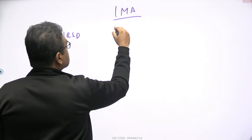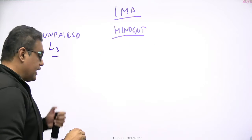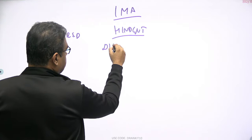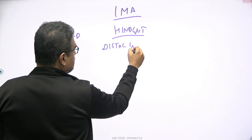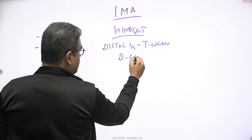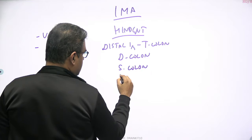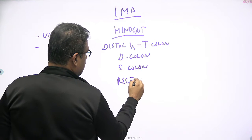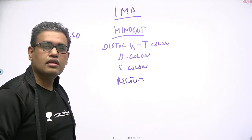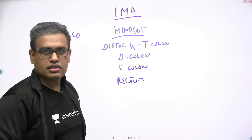So what are the derivatives of the hindgut? Where the midgut ends, the hindgut starts. It will be the distal one-third of the transverse colon, then the descending colon, then the sigmoid colon, and then the rectum and the upper part of the anal canal — because the lower part of the anal canal is an ectodermal structure, while these are endodermal gut structures.